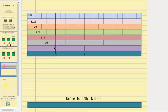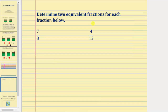Let's finish by determining two equivalent fractions for each of the fractions given here. Beginning with seven-eighths, because seven and eight don't share any common factors other than one, this fraction is simplified, which means to find equivalent fractions we will need to multiply the numerator and denominator by the same whole number.